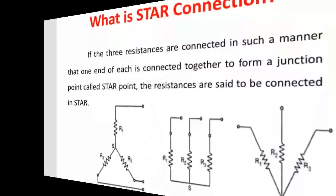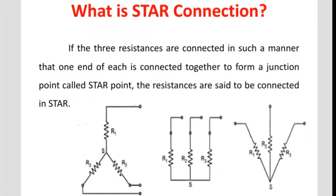First we shall see what is a star connection. If three resistances are connected in such a manner that one end of each is connected together to form a junction, then it is called a star point, and these resistances are said to be connected in star.